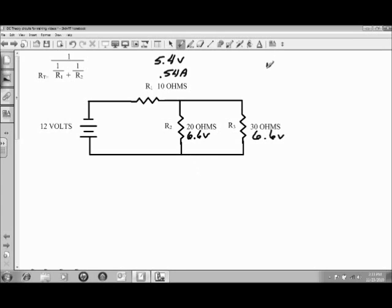The current at R2, applying Ohm's law again, is going to be the voltage divided by the value of R2. Making sure to use the correct numbers, the 6.6 volts divided by the 20 ohms of resistance is going to equal the current on R2, which is 0.33 amps.